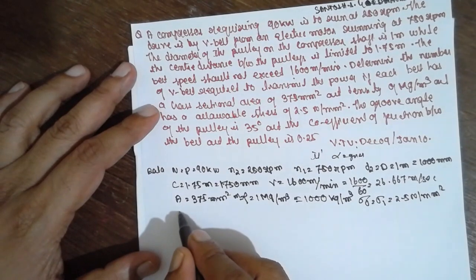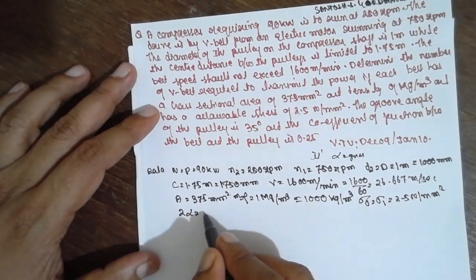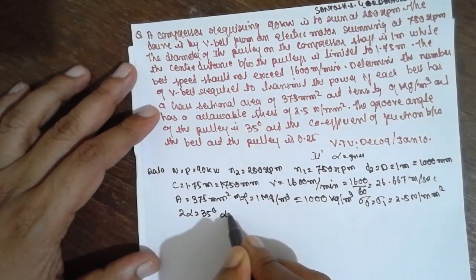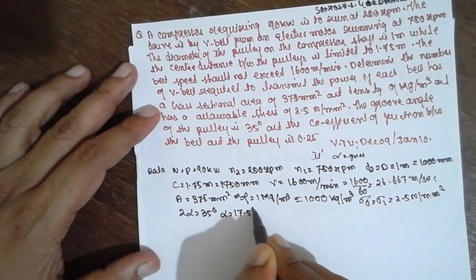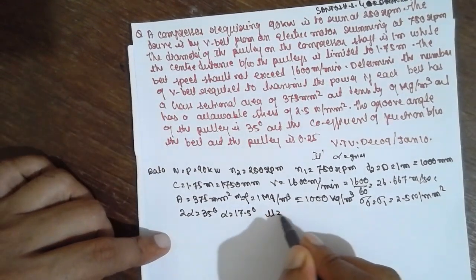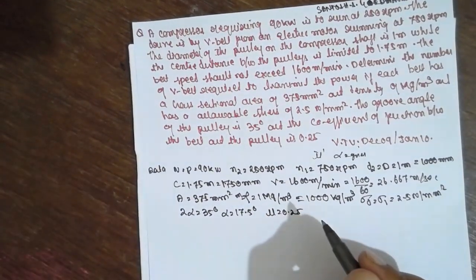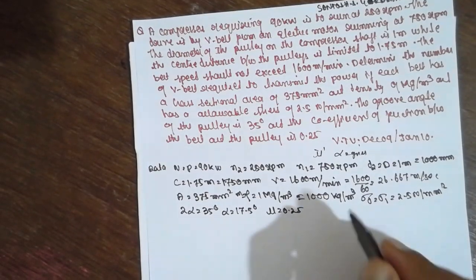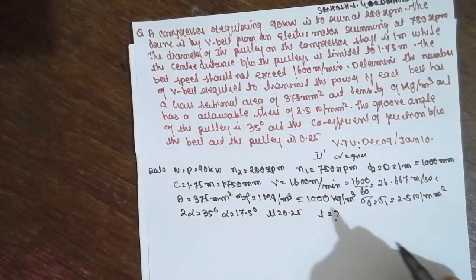And 2 alpha is 35, therefore alpha will be 17.5 degrees. And mu is equal to 0.25. Here we have to find out number of belts i, number of belts required.